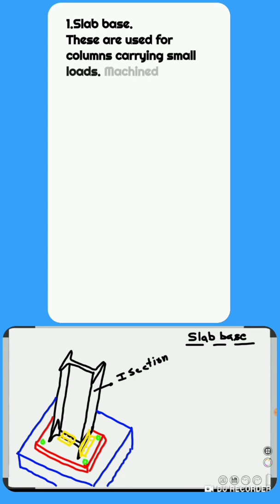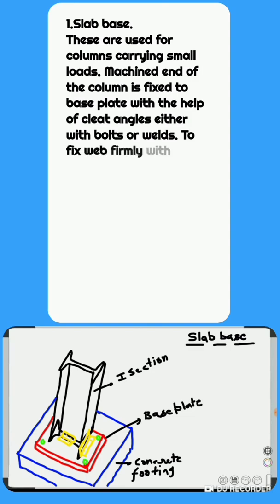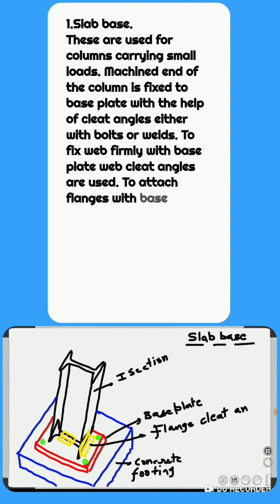1. Slab Base: These are used for columns carrying small loads. Machined end of the column is fixed to base plate with the help of cleat angles, either with bolts or welds. To fix web firmly with base plate, web cleat angles are used.